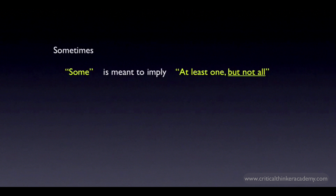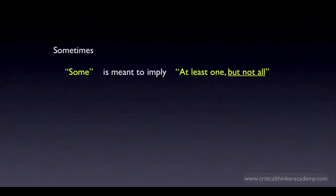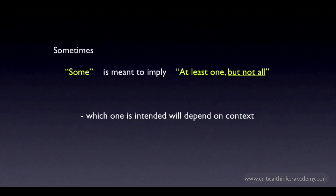But sometimes, 'some' is intended to rule out this possibility. Sometimes we want it to mean 'at least one, but not all.' Like if I say 'some people will win money in next month's lottery,' I mean at least one person will win, but not everyone will win. Which reading is correct — whether it means 'at least one' or 'at least one but not all' — will depend on the specific context.